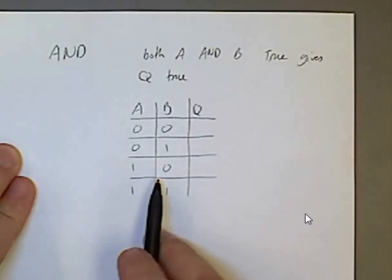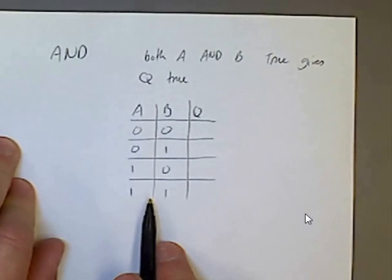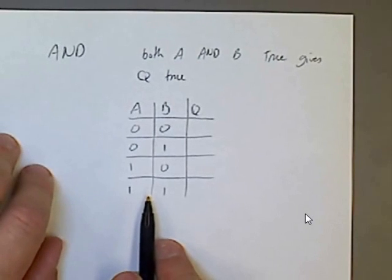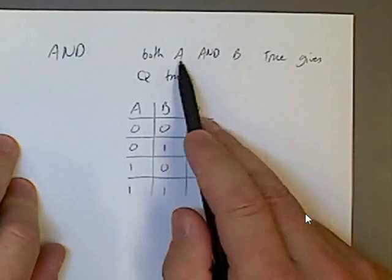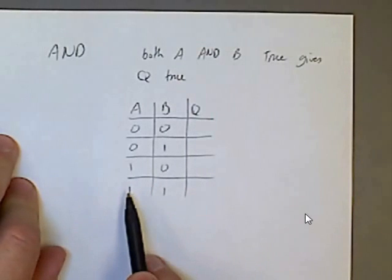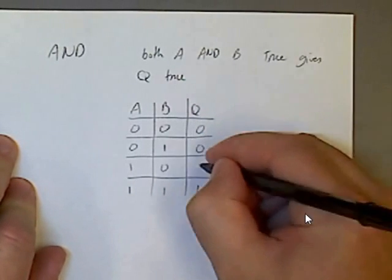I always draw my four potential input states in this manner so that I can recognise very quickly between the gates and logic tables. So if both A and B are true, it gives the output TRUE. There's only one case where both A and B are TRUE. Otherwise the output is FALSE or 0.